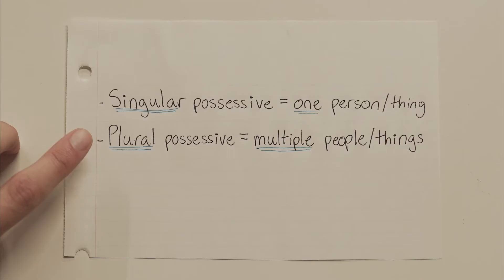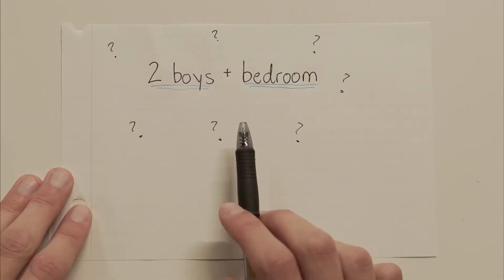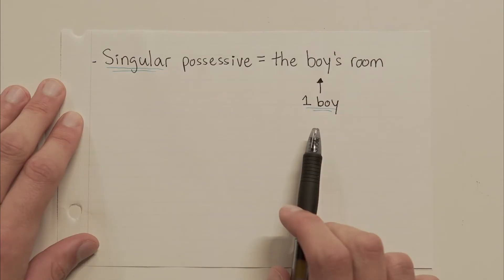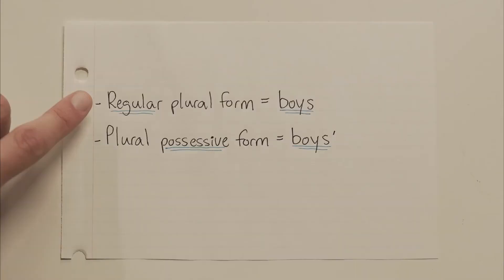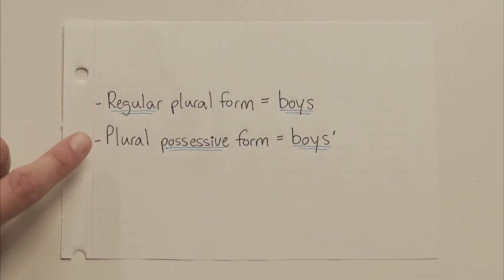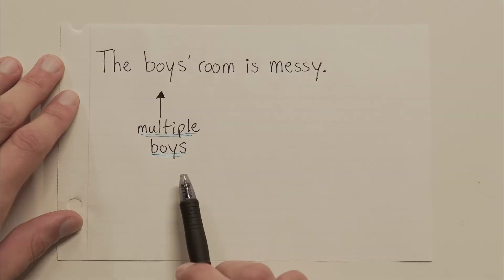So what would that look like exactly? What if we had multiple boys — let's say two — who shared a bedroom? If it were singular possessive, as in one boy had that room, it would be the boy's room, boy apostrophe s. But now we have multiple boys owning that same room, so instead of starting with the singular form and adding apostrophe s, we have to start with the plural form. Once we have the plural form, all we need to do to make it possessive is add an apostrophe at the very end. So we could say something like, the boys' room is messy — write the standard plural form boys, b-o-y-s, and then just add an apostrophe.